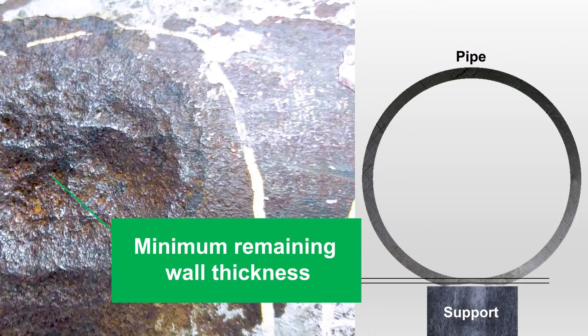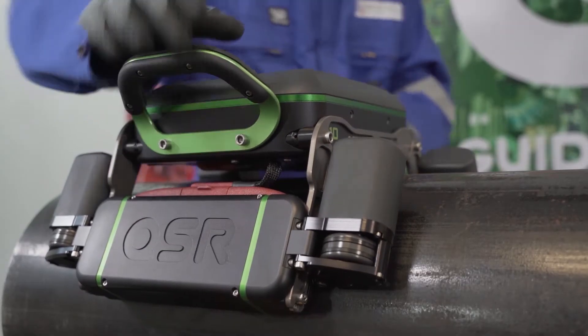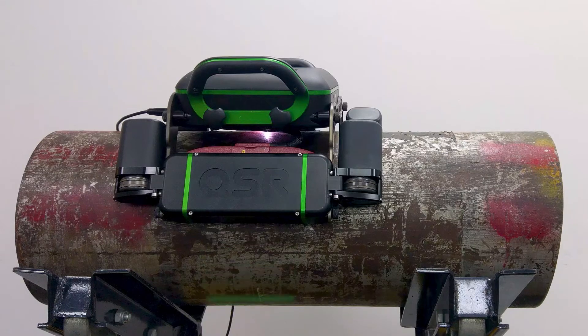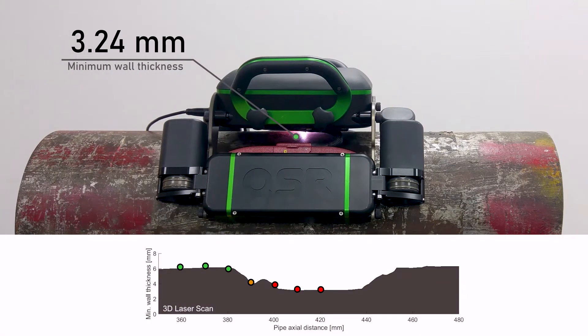So if you want to measure the minimum remaining wall thickness, then you need the QSR1. The QSR1 uses GUL scanning to accurately give the minimum remaining wall thickness along the pipe.